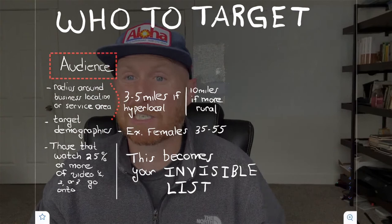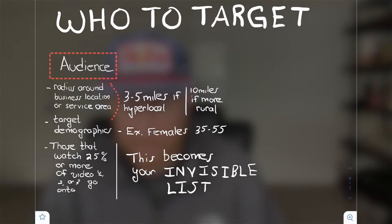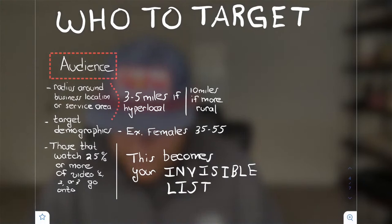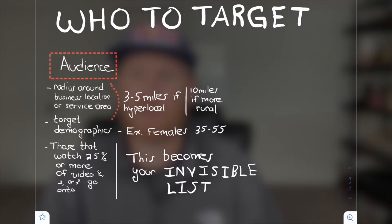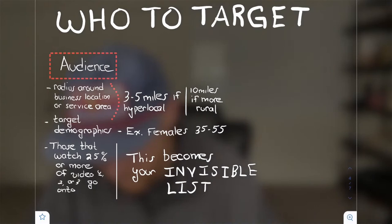Now, who are we going to target with these videos? Since we're talking about local businesses or local service providers, your audience is going to be a radius around your business location or service area. If you're in a fairly large market, that's going to be a three to five mile radius around your business — those are the most likely prospects to walk in, especially if the customer needs to come to your place of business several times. If you're more rural, spread that out to 10 or 20 miles.